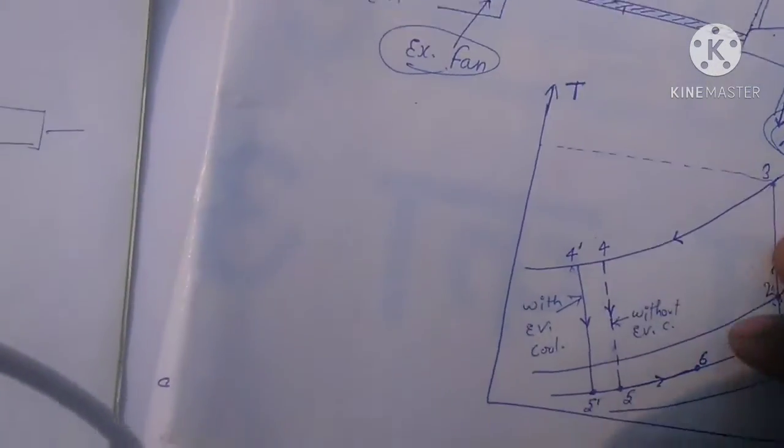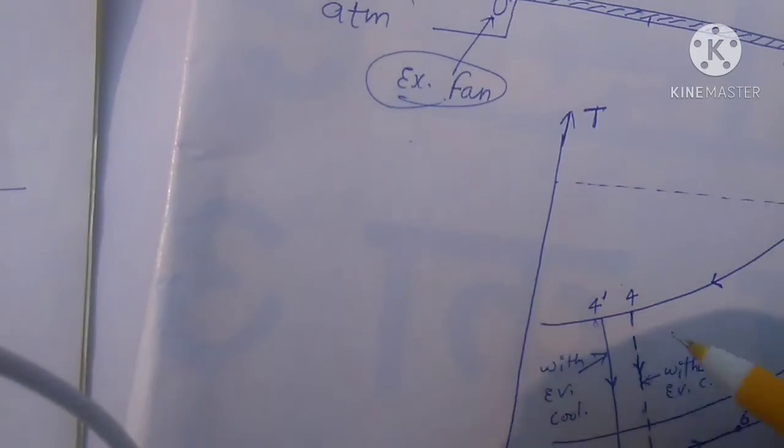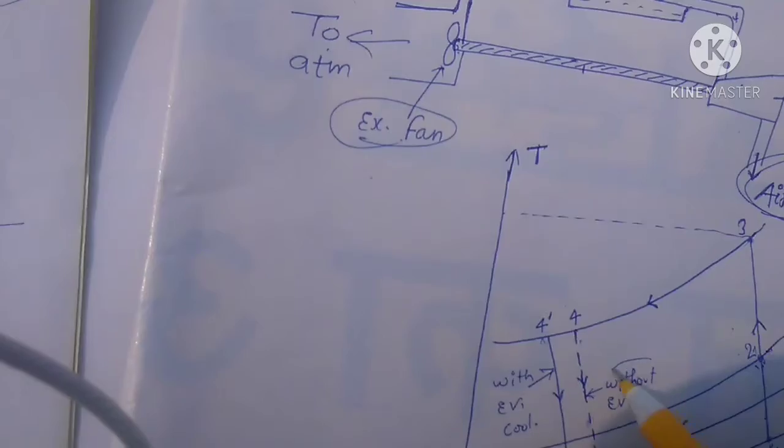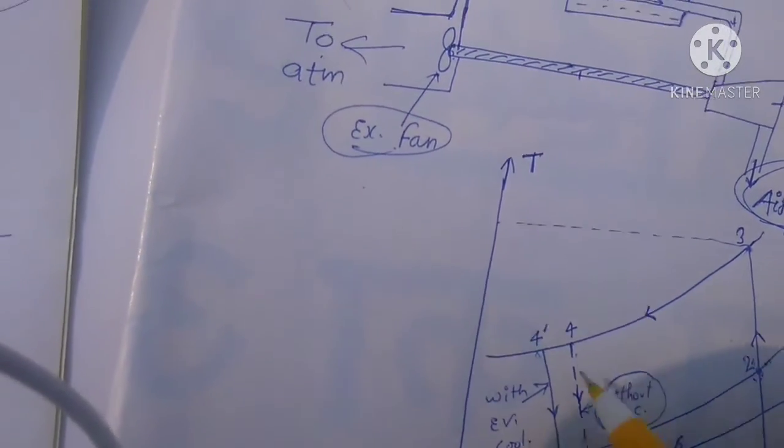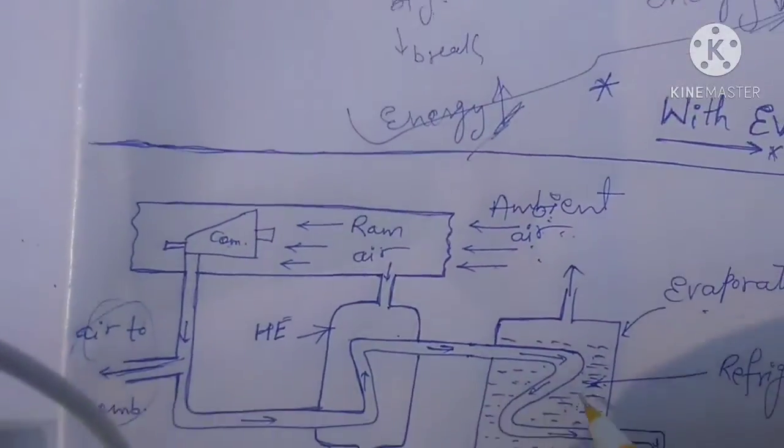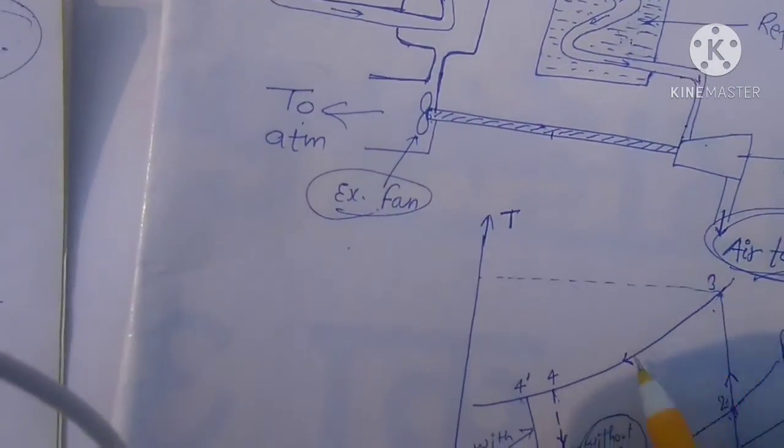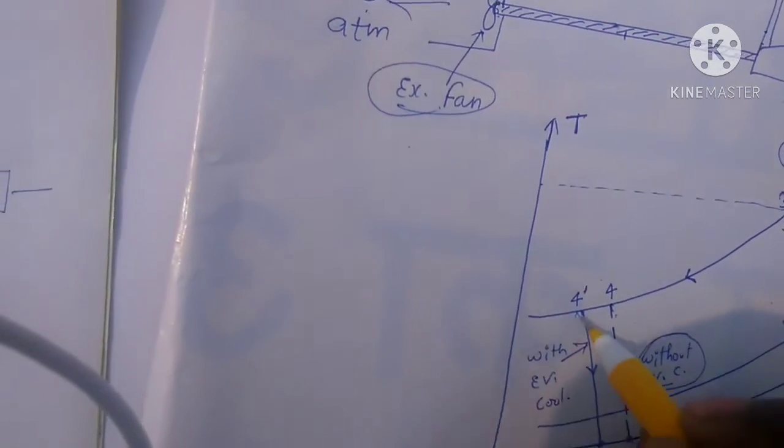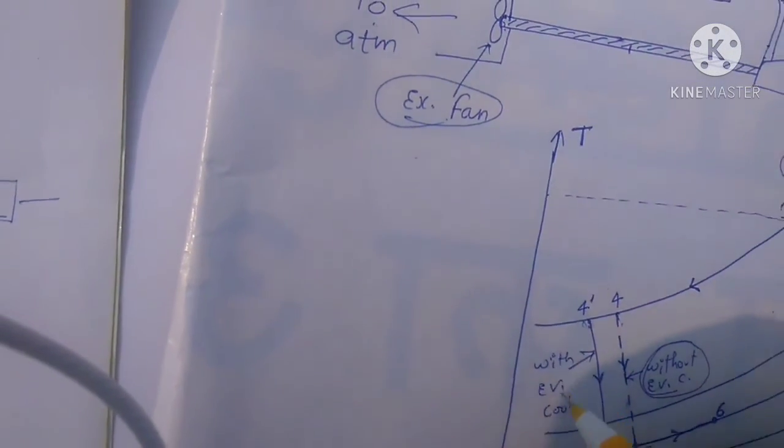After that, here is heat addition and heat extraction. Notice here four to five shows without evaporator cooling. But after the evaporator is used for much more temperature lowering, then four dash and five dash is used with evaporator cooling.